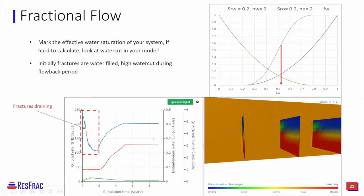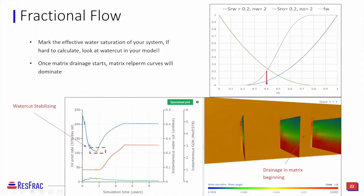Going forward in time, indicated by a yellow dot, to where I'm starting to drain the matrix region, you can see water saturation has started to change along the outside of the fractures in the matrix, indicating drainage from the matrix. At that point, water cut in the model is about 20 to 21%. Tracing back to the fractional flow curve at 20–21% and tracing down gives a water saturation of 40%, which in fact matches the saturation of the matrix being depleted, visible as a faint yellow alongside the fractures.